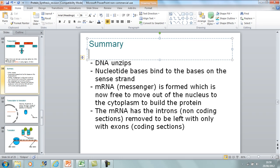Transcription in summary: first, the double-stranded DNA uncoils and unzips so you are left with two strands. Free nucleotide bases bind with the sense strand of the DNA, which is usually the right-hand one. Those nucleotide bases then join up and form mRNA, or messenger RNA. That is then free to move from the nucleus into the cytoplasm where it can build the protein.